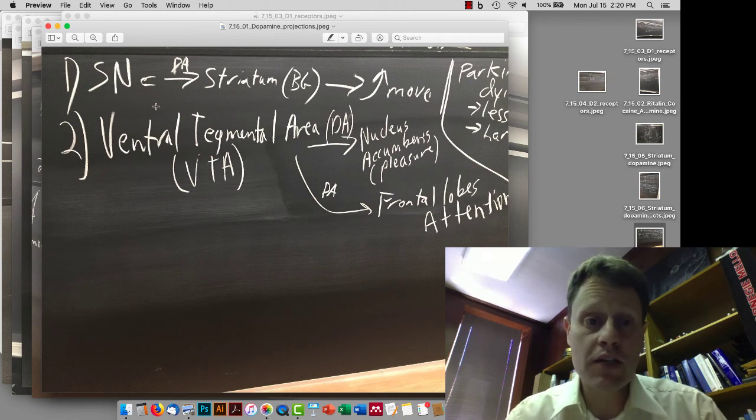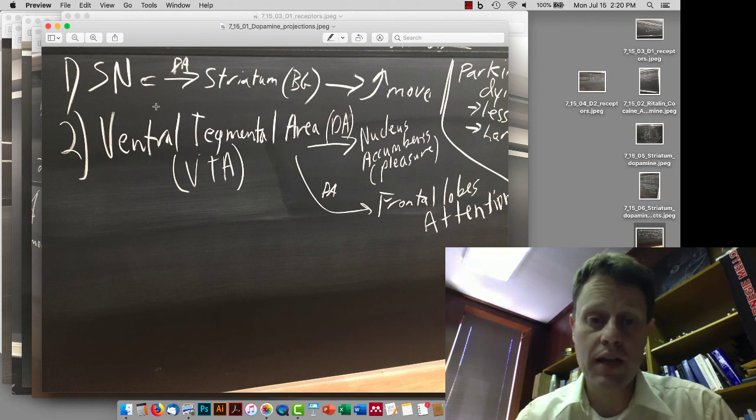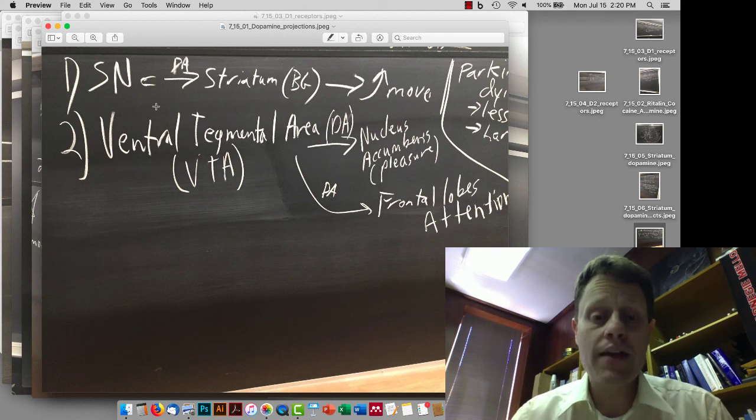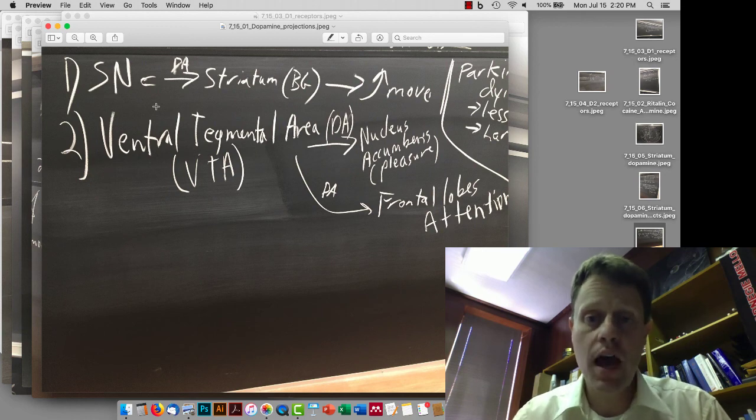The cells in the substantia nigra send their axons to the striatum, which is part of the basal ganglia. That's the only part aside from the substantia nigra that you're going to need to know this semester. And the effect of dopamine being released from the substantia nigra to the striatum is to enhance movement. We'll get back in a minute to how that happens. There are two different things that go on, both of which increase movement.